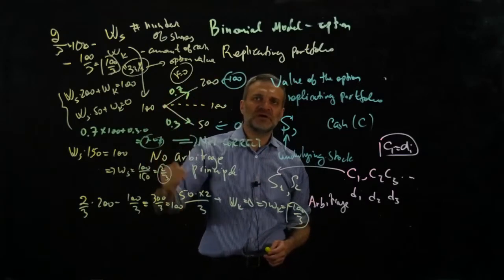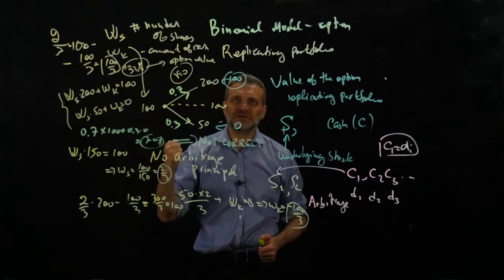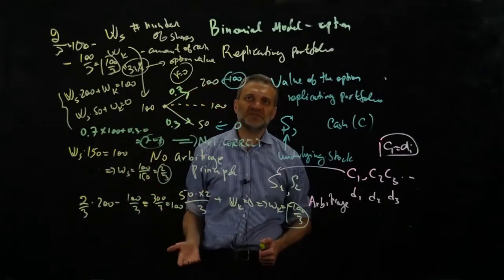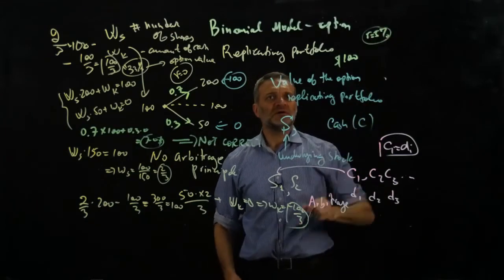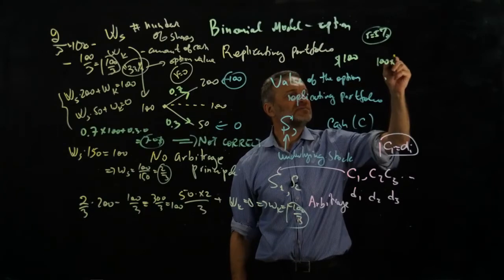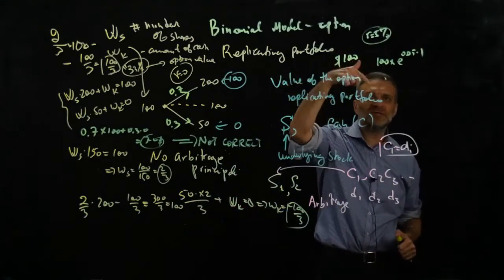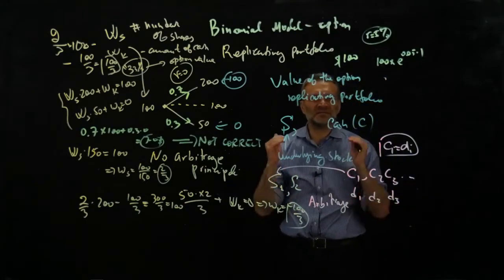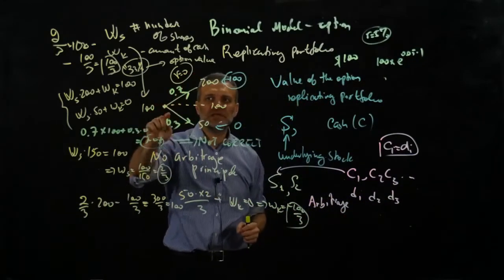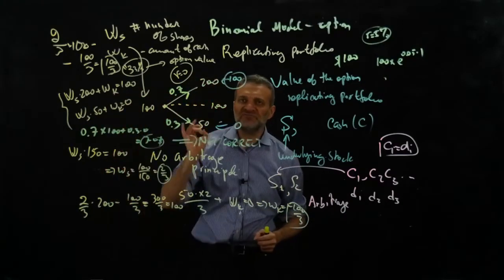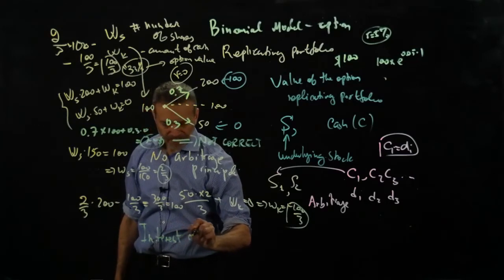Think about futures prices: the fair futures contract price has nothing to do with your expectations about where the price will go. If you have a stock at $100 today and the interest rate is 5%, the futures price is 100 × e^(0.05 × 1). It has nothing to do with whether you think the stock will double. The futures price is fixed by current data alone — and it's exactly the same principle here. The objective probabilities are irrelevant to the option price.